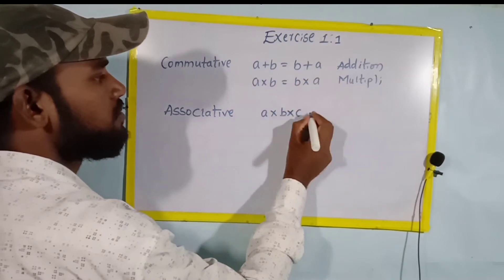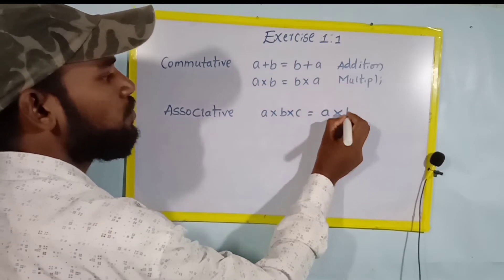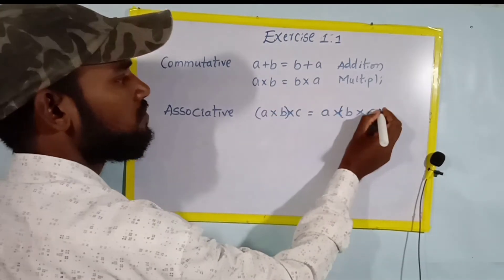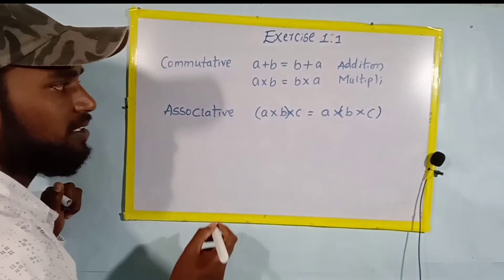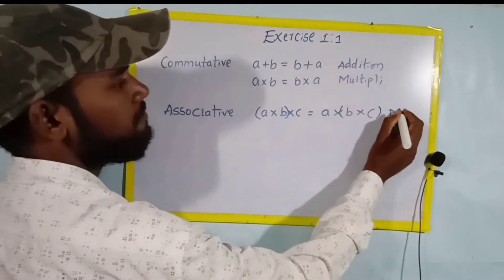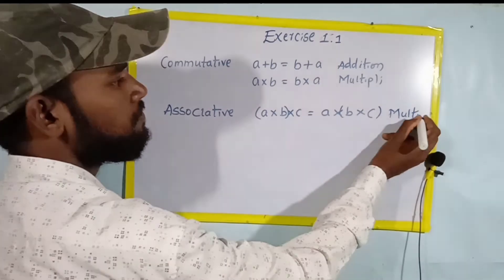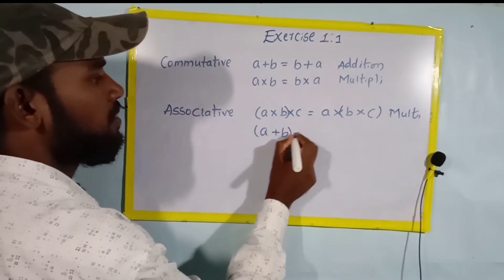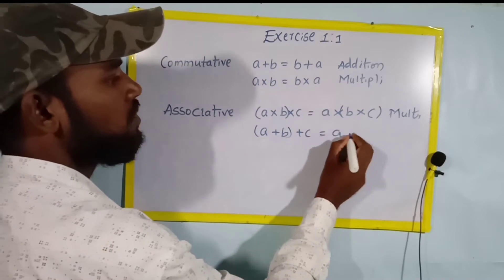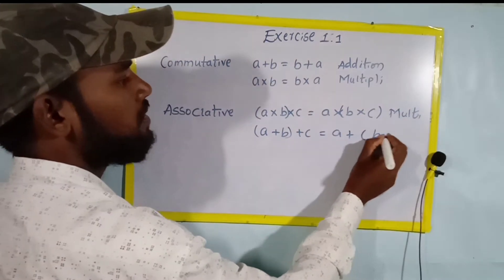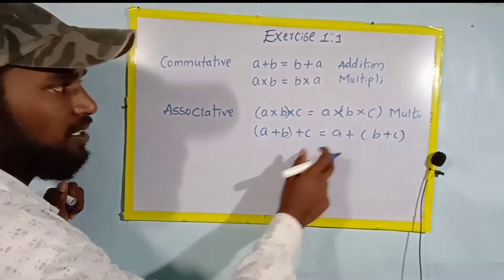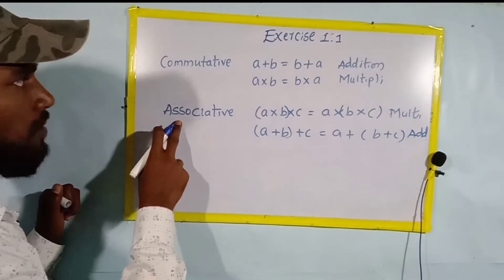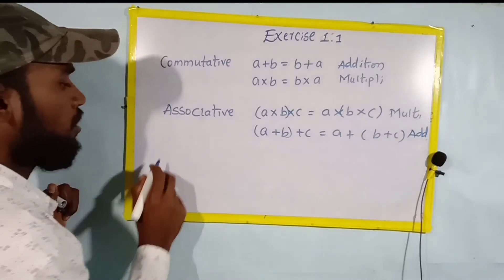Next is the associative property. For multiplication: a into b into c is equal to a into b into c. For addition: a plus b plus c is equal to a plus the quantity b plus c. This is the associative property.